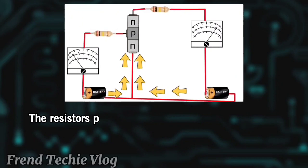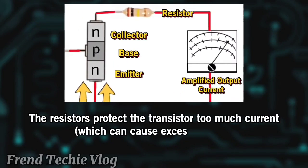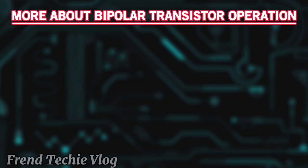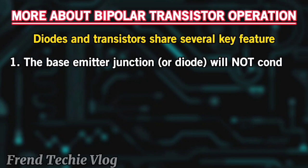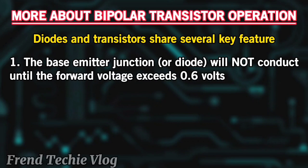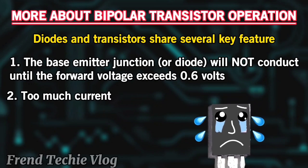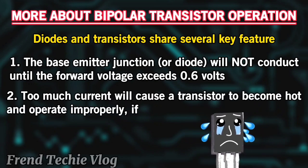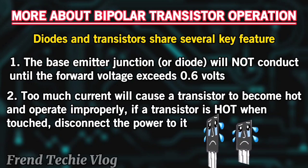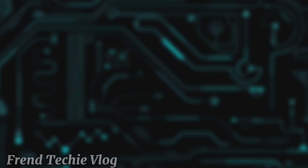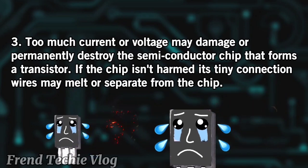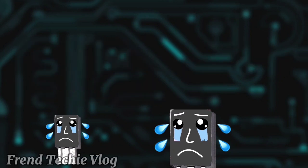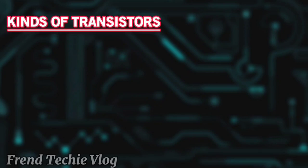Resistors protect the transistor from too much current, which can cause excessive heat. The base-emitter junction will not conduct until the forward voltage exceeds 0.6 volts. Too much current will cause a transistor to become hot and operate improperly — if a transistor is hot when touched, disconnect the power. Too much current or voltage may damage or permanently destroy the semiconductor chip. If the chip isn't harmed, its tiny connection wires may melt or separate from the chip. Never connect a transistor backwards.